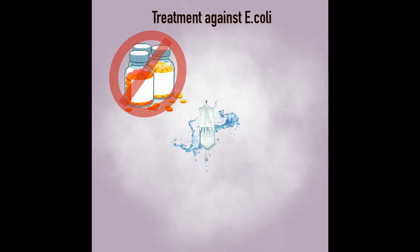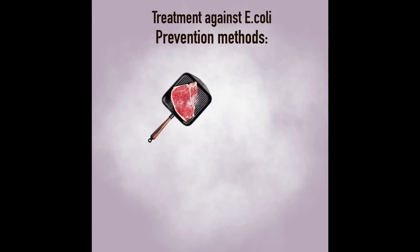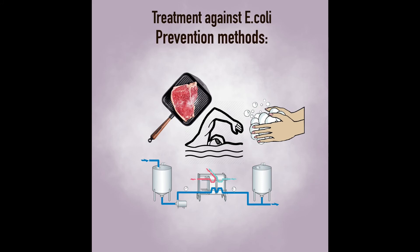An effective treatment for symptom relief is IV fluids for dehydration and exhaustion. If you develop kidney failure, then a kidney dialysis will be performed. The best way to avoid an E. coli infection is through prevention methods, like thoroughly cooking meat, avoiding consuming unpasteurized products, washing your hands more often or before every meal, and if you go swimming in a natural environment like a lake where E. coli could be in the water, avoid swallowing water or avoid swimming in those places altogether.